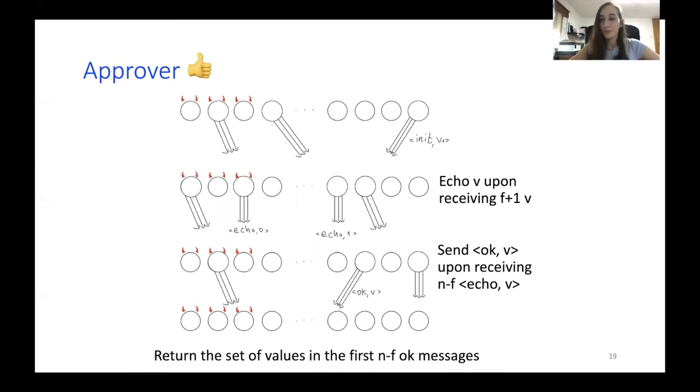But we do have one problem here when transforming it to committees. We just switch the f plus one to b and the n minus f to the w parameters. And this should work, except there is one small problem. There are two values that could be echoed by the same process. So for example, if this process hears b plus one value zero, and then b plus one values one, it will need to echo both of them, which is not good because we said before we want each process to only speak once before it finishes its role in the committee.